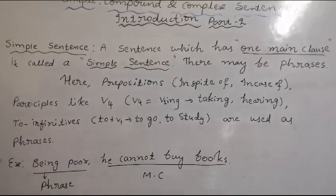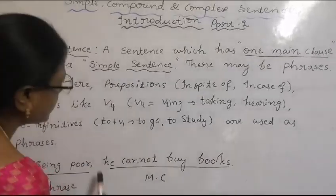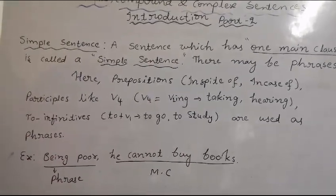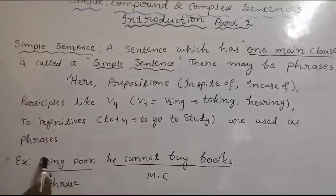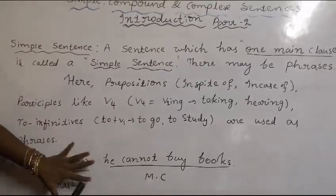It is giving complete meaning independently, that's why it is called MC - main clause. We already learned this in previous videos. 'Being poor' is a phrase. Even without having a phrase, if one main clause is there, we have a simple sentence.